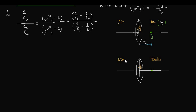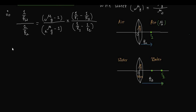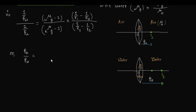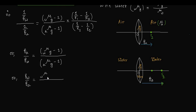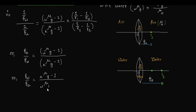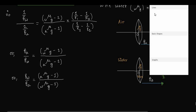When the same lens is immersed in water, the second principal focus shifts to a new position and its distance is Fw — the focal length of the lens in water. Therefore, Fa/Fw = (w_mu_g − 1) / (a_mu_g − 1), which gives Fw/Fa = (a_mu_g − 1) / (w_mu_g − 1). This is the ratio of focal length in water to that in air.